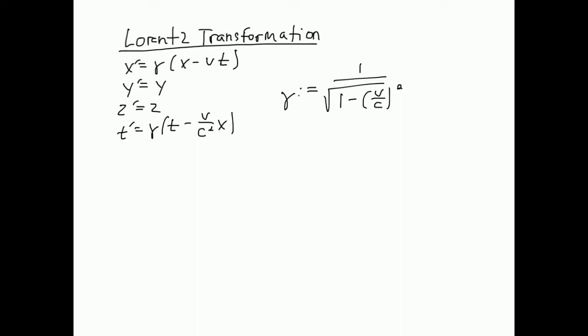Here are the full Lorentz transformations for a frame moving with velocity v along the x direction. That means the y and z directions do not transform, whereas the x and t directions do. This gamma is the Greek letter gamma — the relativistic gamma factor. It's one of the most important things in this chapter. It tells us how big the relativistic effect is. When gamma is one, this becomes the Galilean transformation. When gamma is very large, the relativistic effects are very large.